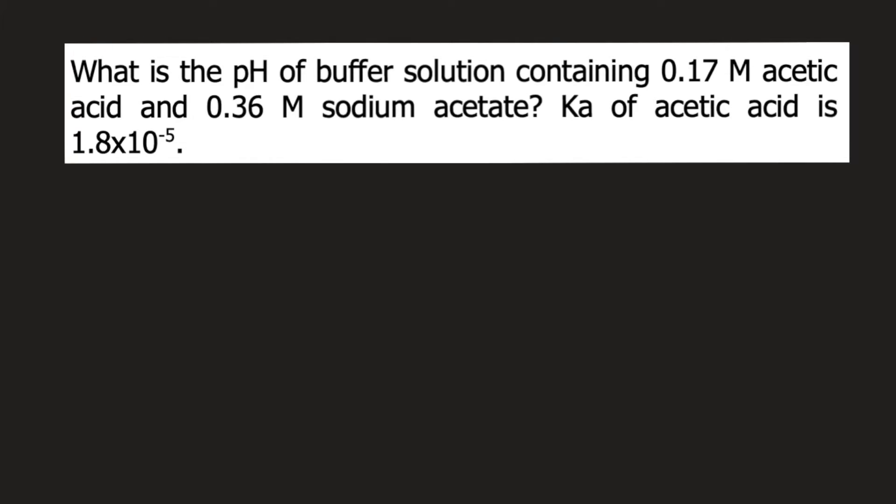What is the pH of buffer solution containing 0.17 molar acetic acid and 0.36 molar sodium acetate? The Ka of acetic acid is 1.8 times 10 raised to negative 5.